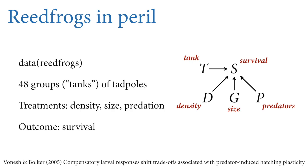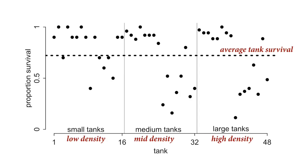In the DAG we have in the middle our outcome of interest — survival, the number of tadpoles who survive — and then the three experimental treatments: density, size, and predators. There's also the tank variable, because there may be unobserved things about each tank that explain the numbers of tadpoles that survived. There will be some heterogeneity among them due to unobserved issues. Think of it as a competing cause.